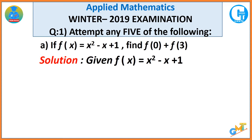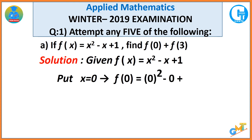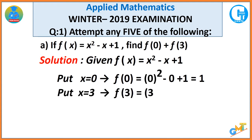Put x equal to 0 and x equal to 3 in f(x). Putting x equal to 0 implies f(0) is equal to 0 squared minus 0 plus 1, which is equal to 1. Putting x equal to 3 implies f(3) is equal to 3 squared minus 3 plus 1, which is equal to 7.